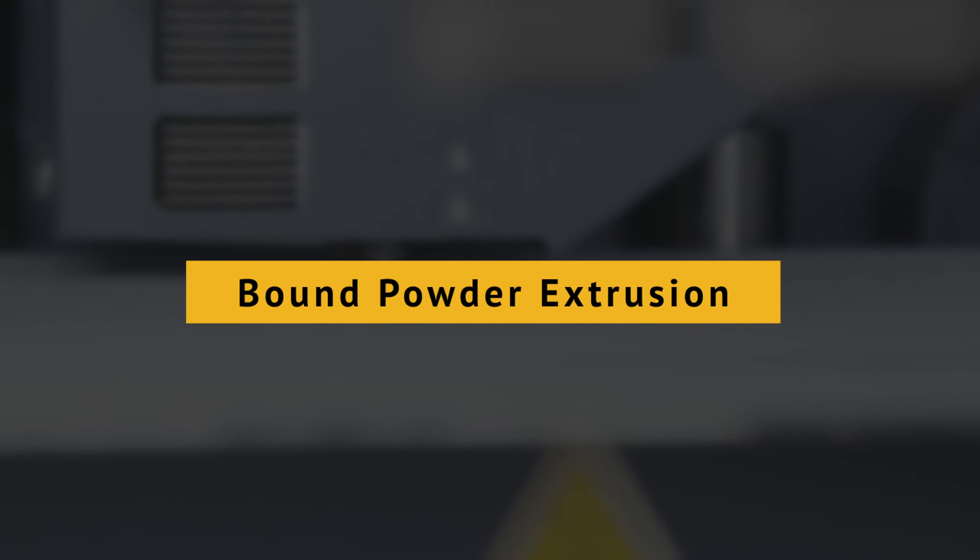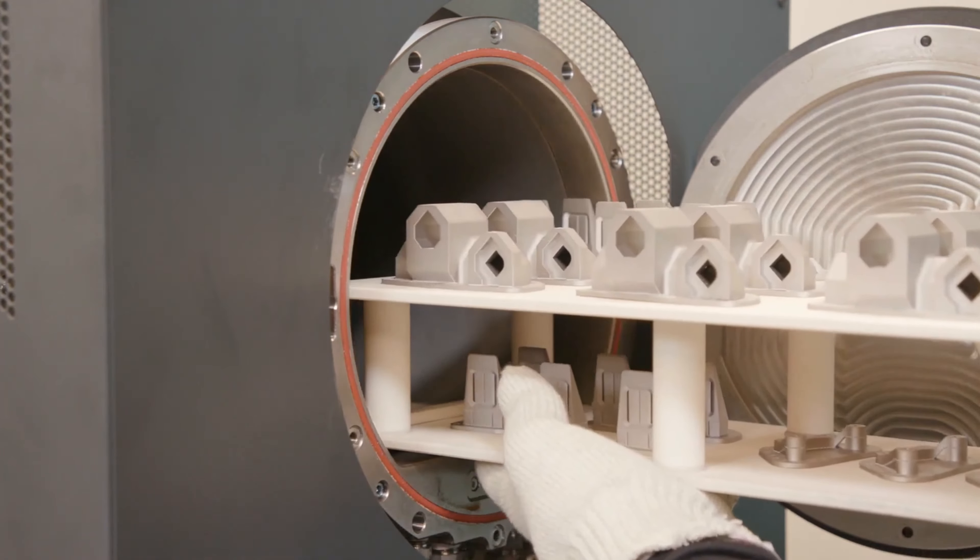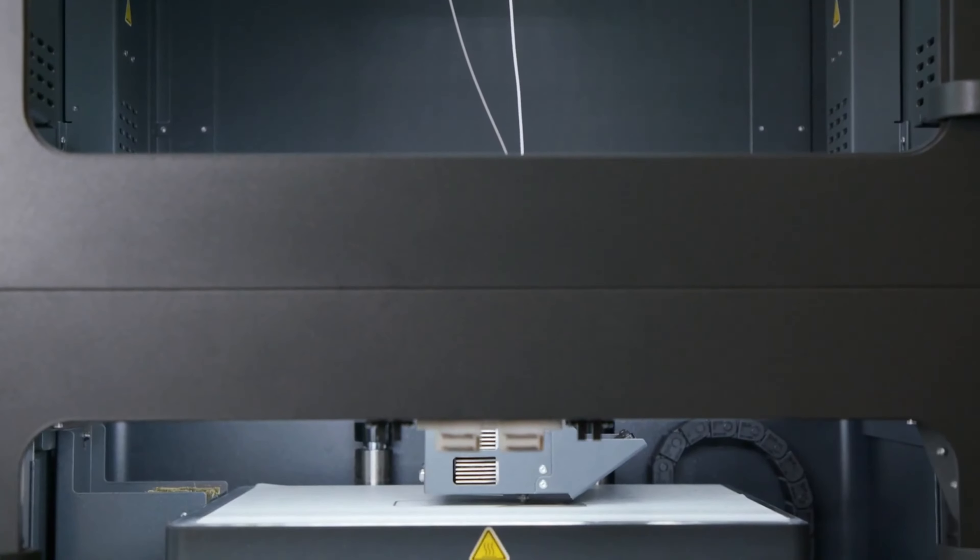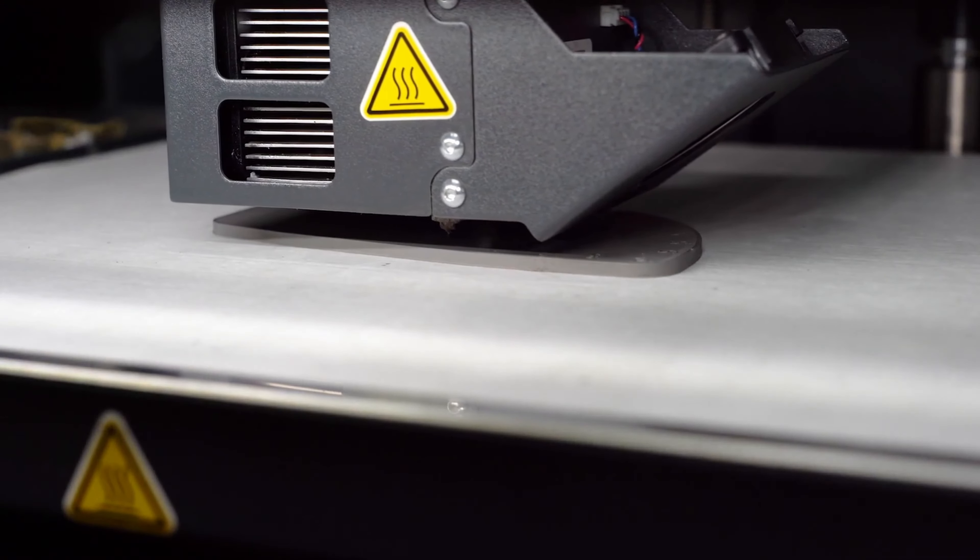Bound powder extrusion, or BPE, is a method in which metal powder isn't lost. Instead, the powder is bound together in waxy polymers, does not require the safety measures as with powder printers, and the filament is extruded out of a nozzle in a manner very similar to standard 3D printers.